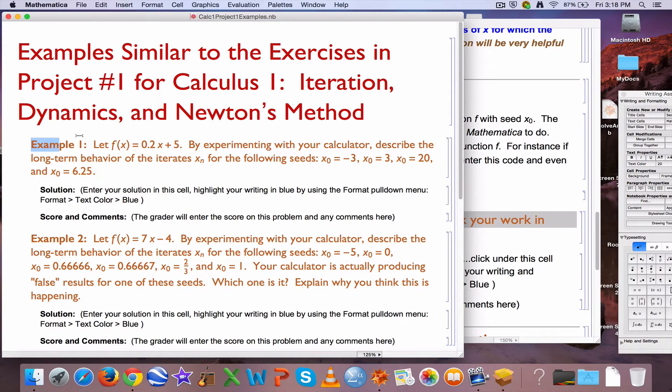So what do we have here, the example one, the function is f of x equals 0.2x plus 5. The directions say to experiment with your calculator, but I don't have this calculator on my computer here to show you. I tried looking for a calculator emulator, but it wasn't working on my Mac. So I will go ahead and use Mathematica and the nest list command to confirm what happens here, but you should certainly experiment with your calculator when you do this kind of thing and check my work.